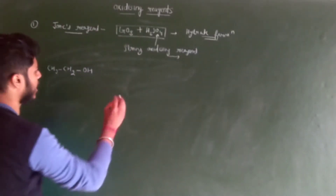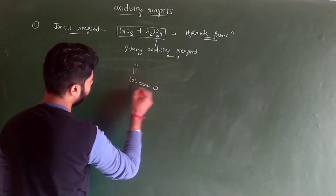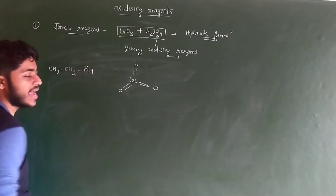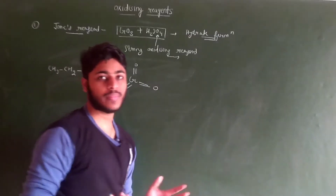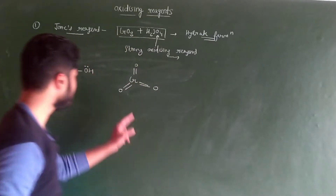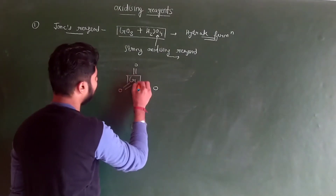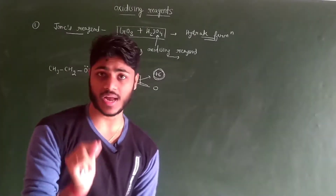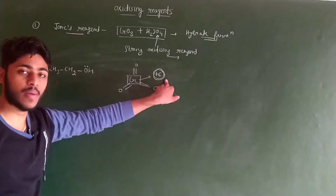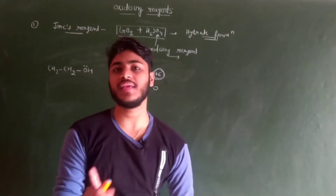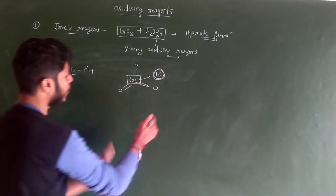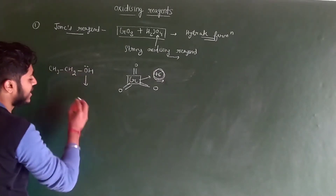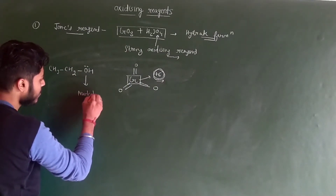Let's talk about the mechanism. The structure of chromium trioxide is Cr with three double-bond oxygens. Here I have alcohol, which has a hydroxyl group with a lone pair of electrons — this will act as a nucleophile. The nucleophilic center and the electrophilic center: chromium is in the +6 oxidation state, so chromium acts as an electrophile. The lone pair of the hydroxyl group attacks the chromium electrophile.